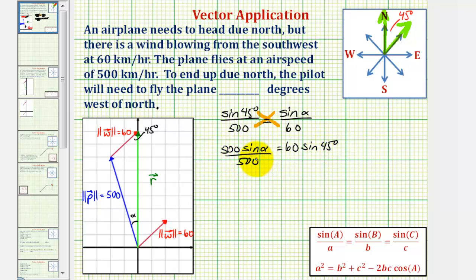Divide both sides by 500. So we have sine alpha equals this quotient here, 60 sine 45 degrees divided by 500.